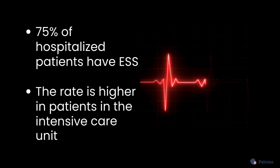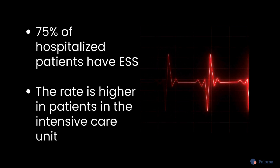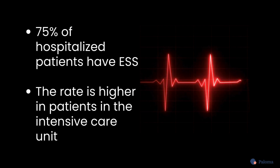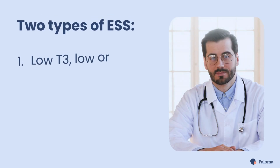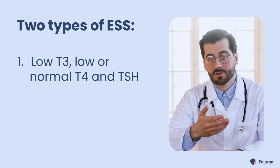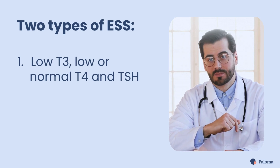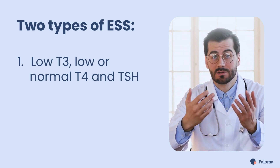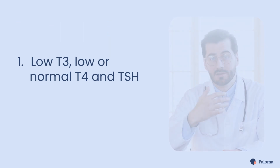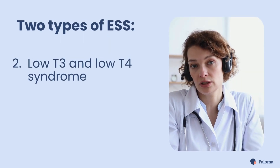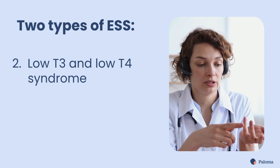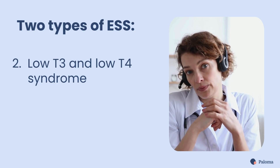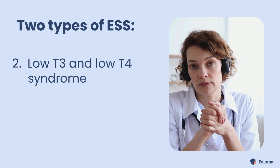It's estimated that around 75% of hospitalized patients have ESS, and the rate is higher in patients in the intensive care unit. There are two types of ESS. The most common and less dangerous is ESS with a low T3 level and low or normal T4 and TSH levels. The less common but more severe form is referred to as low T3 and low T4 syndrome, and is more common in patients in intensive care.